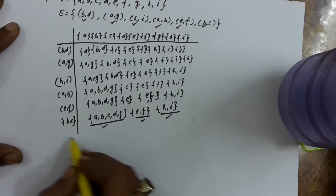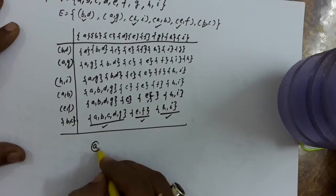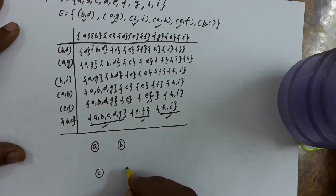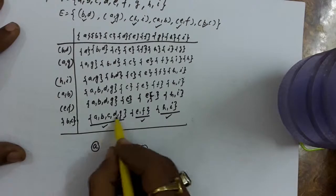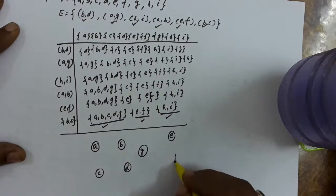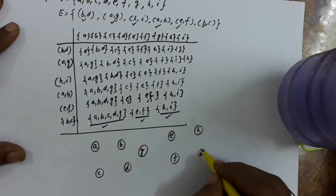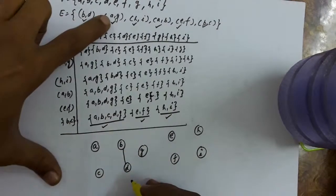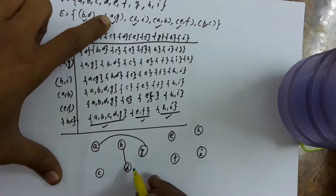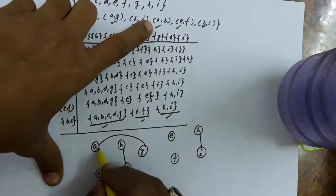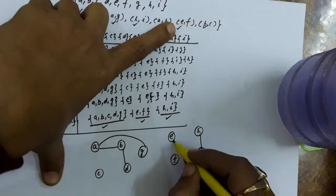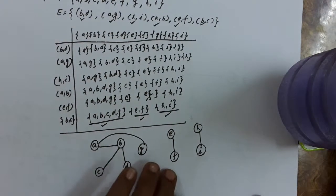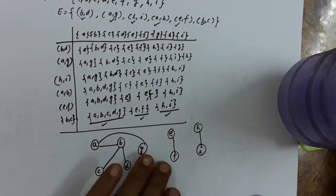Diagrammatically you can also see this. The first connected component has vertices A, B, C, D, and G. Then E and F form another component, and H and I form a third. Connecting the edges: B-D, A-G, H-I, A-B, E-F, and B-C — you can see this part is different, this part is different, and this part is different. So we have three different connected components in this graph.